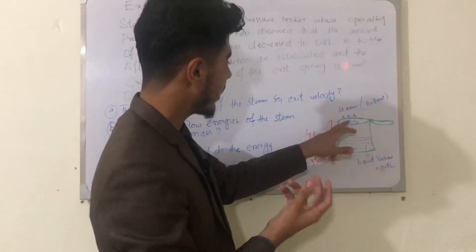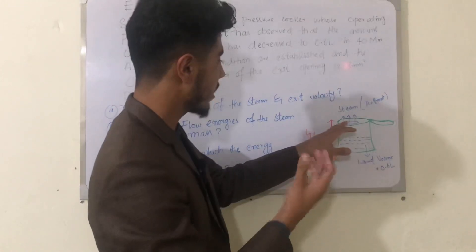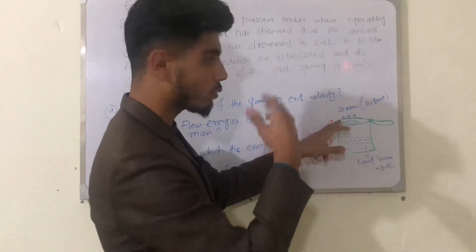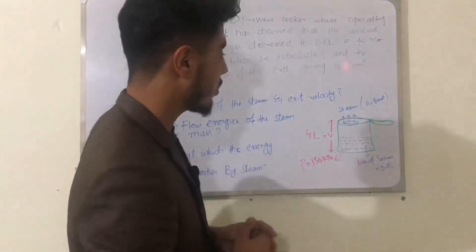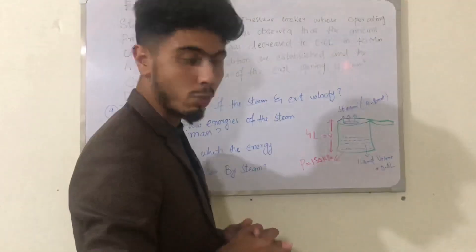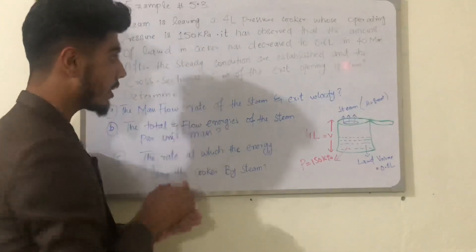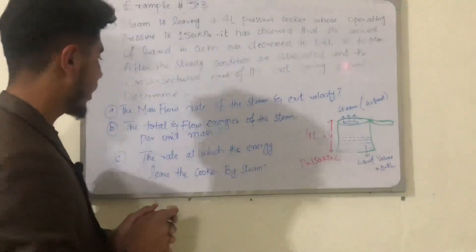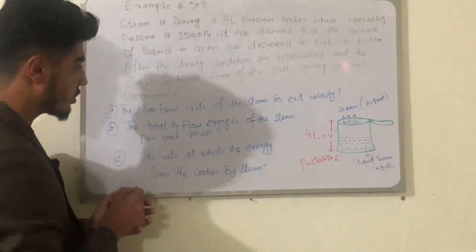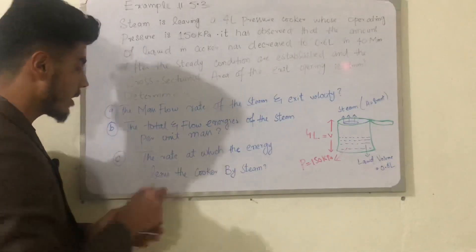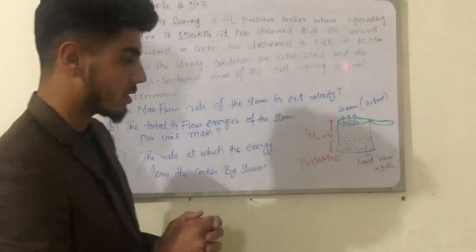The steam exits through a small area of 8 millimeter square from the cooker to the external environment. We need to find the mass flow rate and exit velocity, then the total energy per unit mass and flow energy per unit mass, and finally the rate at which energy leaves the cooker.